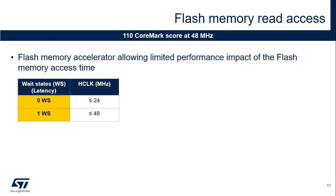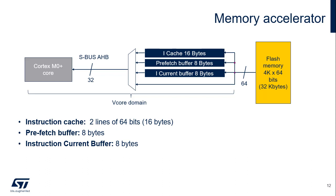When the number of wait states is non-null, the flash memory accelerator should be activated to limit the performance impact. The CPU generates 32-bit instruction fetch requests. The 8-byte line containing the requested instruction is read from flash memory and stored into the current buffer, while the requested word is directly transferred to the CPU. The next line is automatically read from flash memory and stored into the prefetch buffer. In case of sequential code, back-to-back words will be delivered over the SAHB until a branch is encountered. When the code isn't sequential due to a branch, the penalty in terms of cycles is at least equal to the number of wait states. Small loops can be entirely stored in the current and prefetch buffer — no flash memory access is needed.